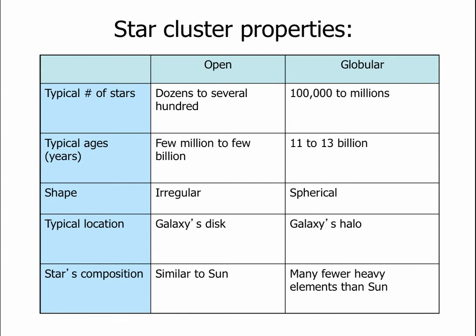Globular clusters have far more stars — 100,000 to millions. They are all old: every globular cluster in our galaxy is estimated to be between 11 and 13 billion years old. They are spherical in shape and located in the halo of the Milky Way, outside the galactic band. Their stellar composition has far fewer heavy elements than the Sun — about 75% hydrogen but 24.5–24.9% helium, with just a fraction of a percent of everything else.